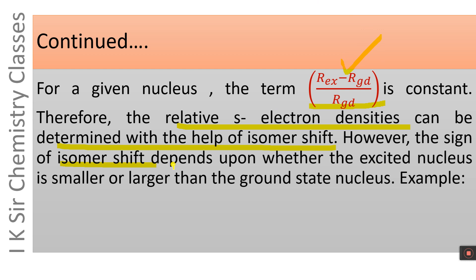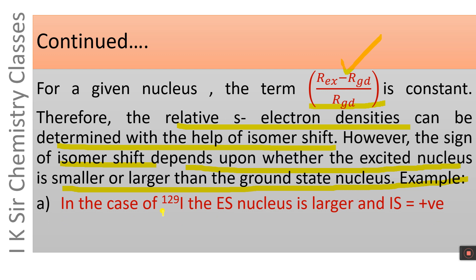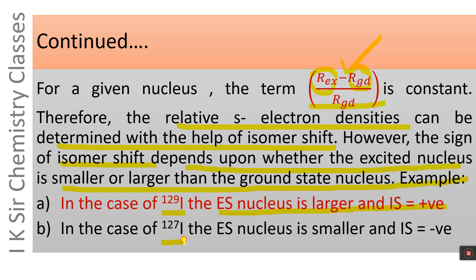The sign of isomer shift depends upon whether the excited nucleus is smaller or larger than the ground state nucleus — that is, whether Rₑₓ is greater than or less than R_gd. For example, in the case of iodine-129, the excited nucleus is larger than the ground state nucleus, so the isomer shift is positive. In the case of iodine-127, the excited nucleus is smaller, and hence the isomer shift is negative.